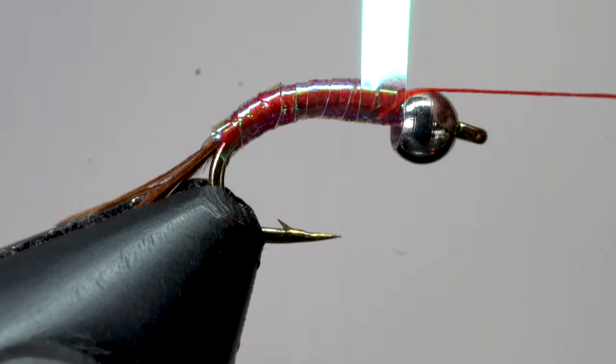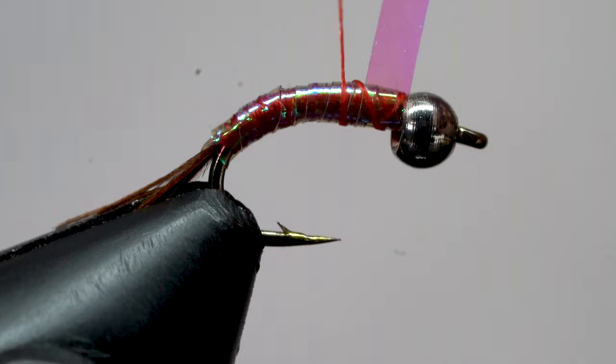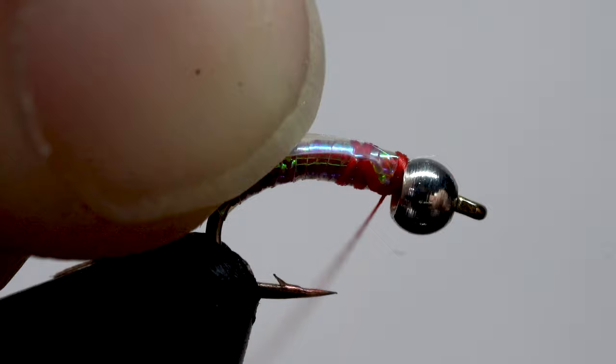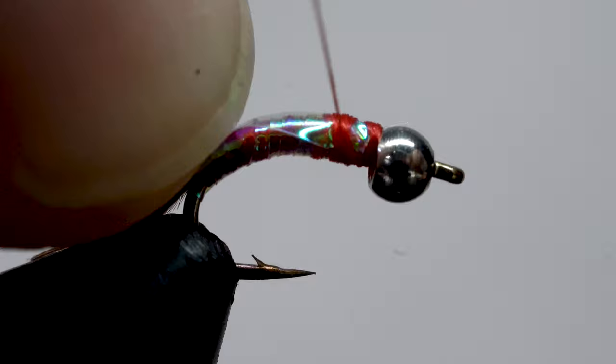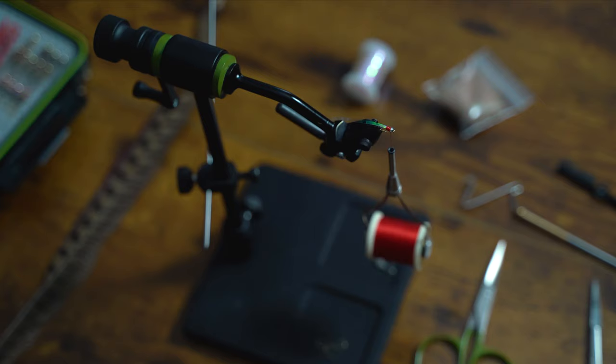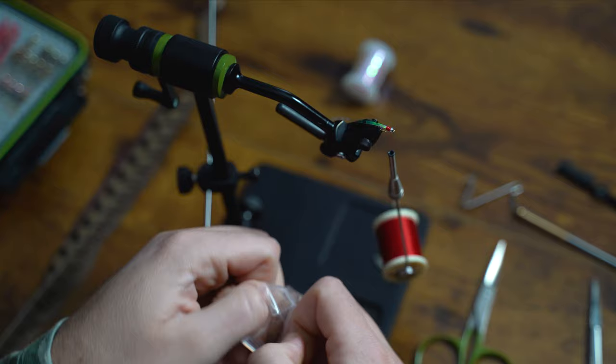Now that we've reached the top, we're going to take our bobbin off the bobbin cradle and hold that tinsel in our right hand. We're going to take the bobbin and the thread in our left hand and go up and over a few times. This is going to lock that tinsel into place. Now grab that tinsel and fold it back. We're going to lock it into place even more and create a nice smooth thorax. This is where we will wrap our dubbing.